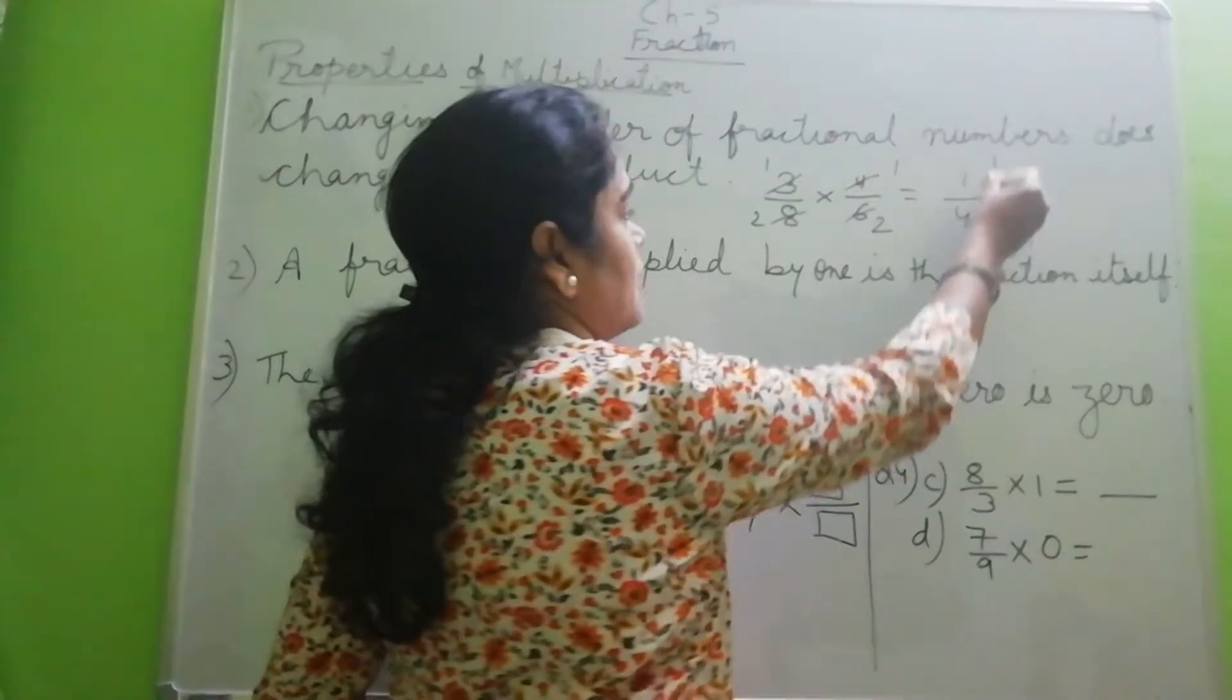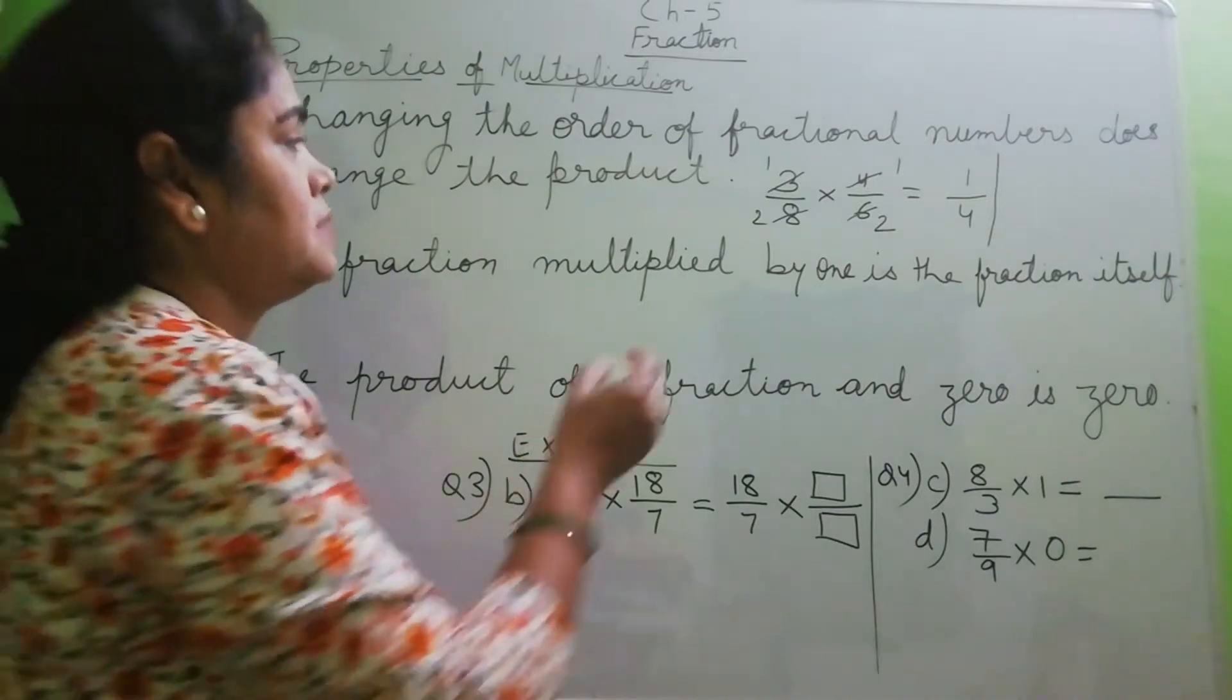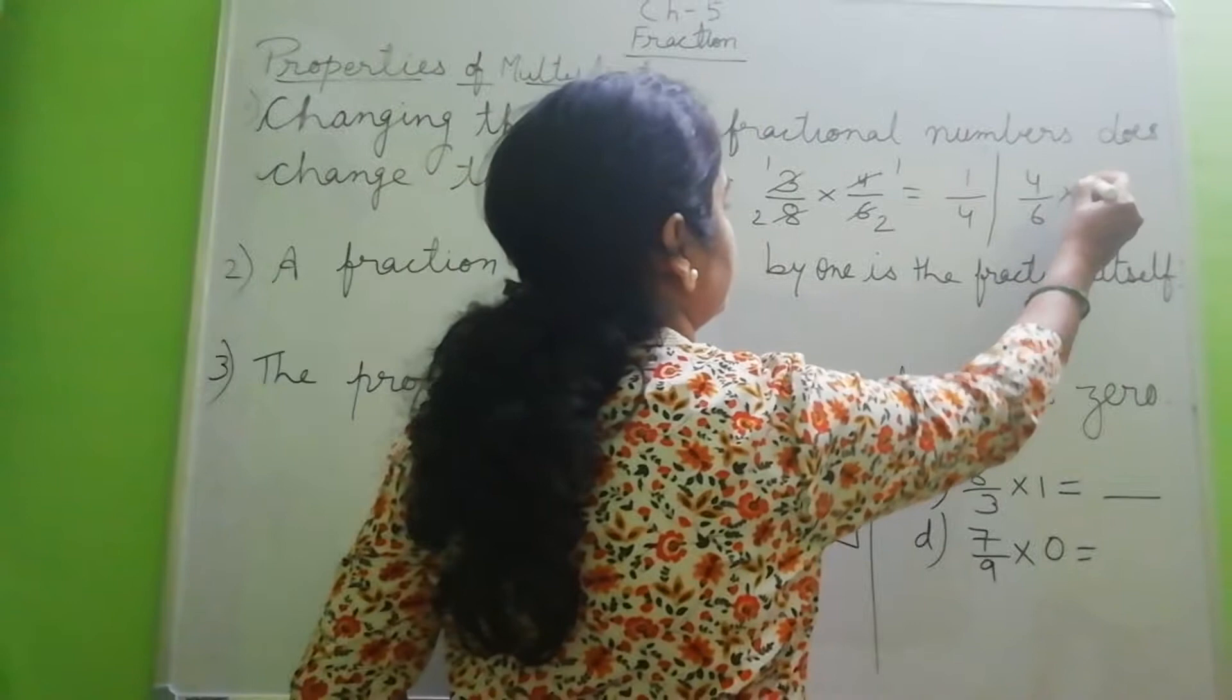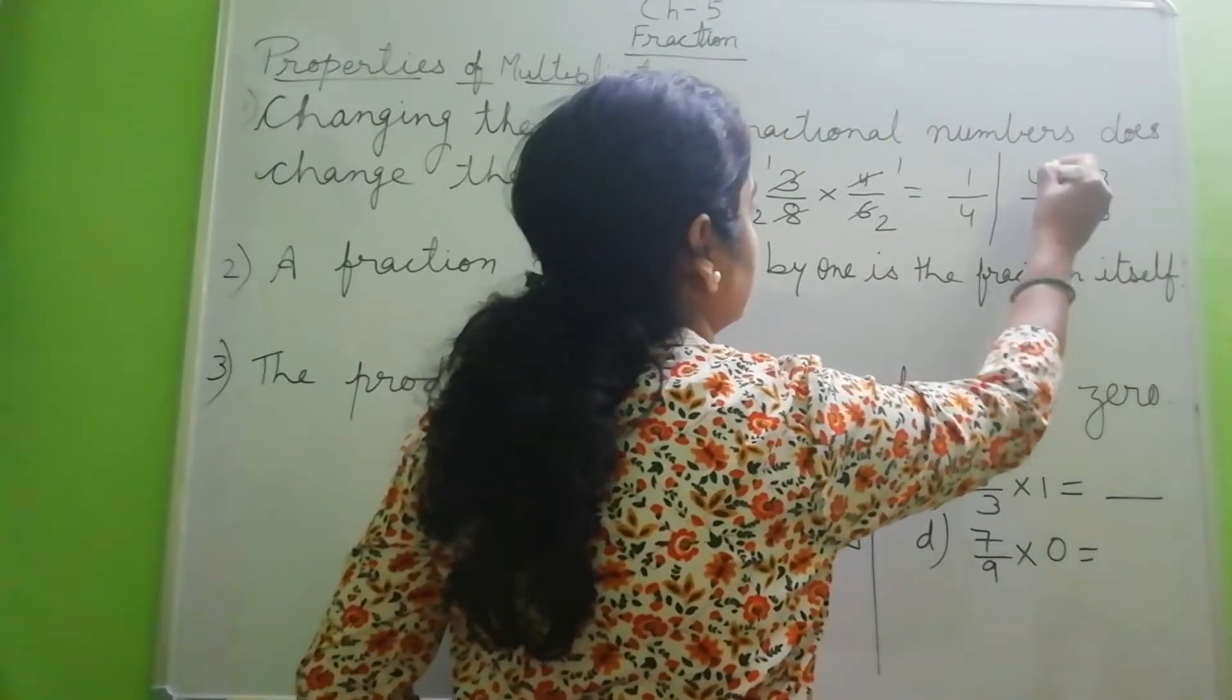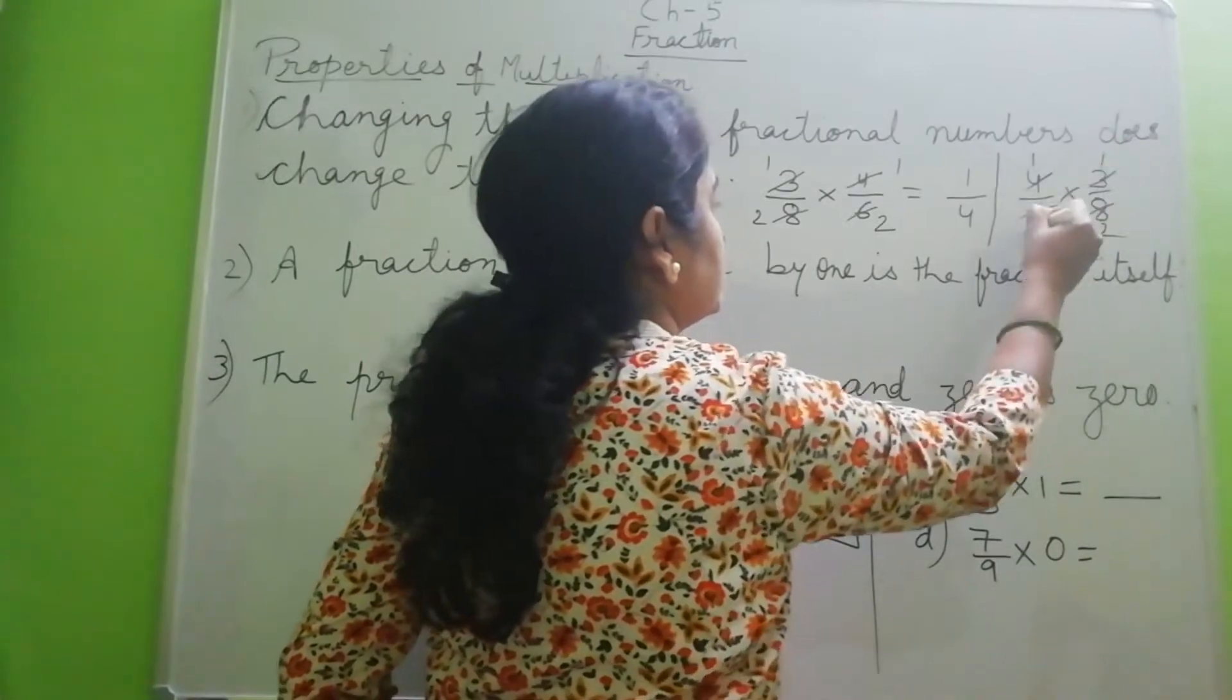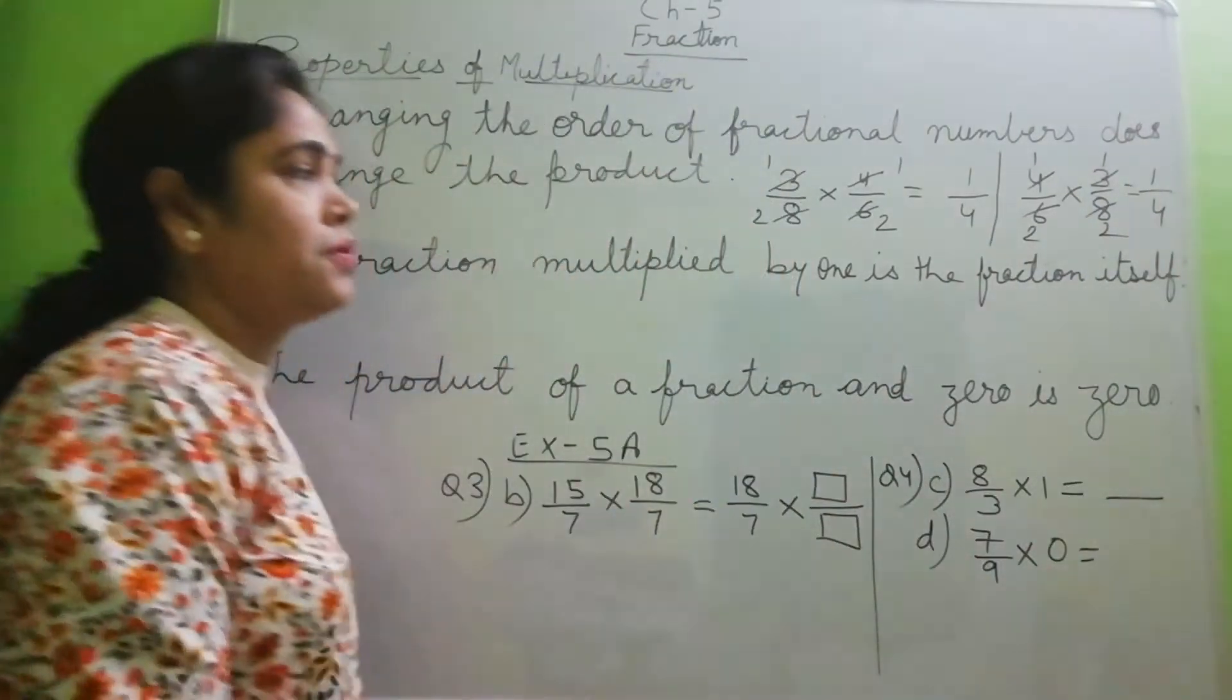Now if I change the order, then what will happen? 4 by 6 will come first and then 3 by 8. Again, you can answer it: 4, 1 ja 4; 4, 2 ja 8; 3, 1 ja 3; 3, 2 ja 6. What is the answer? 1 by 4.